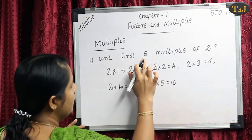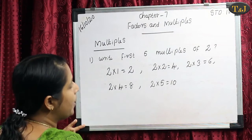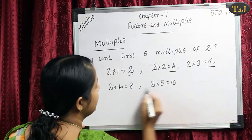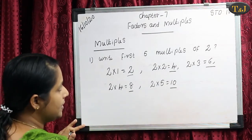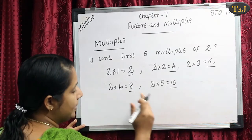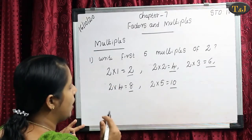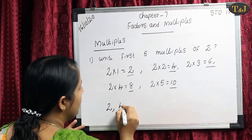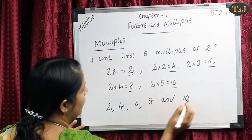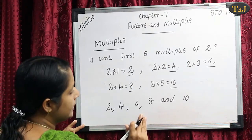Here we want only the 5 multiples of the number 2. The multiples means that when we multiply a number by 1, 2, 3, 4, 5, etc., its result is known as its multiples. So the first 5 multiples of 2 are 2, 4, 6, 8, and 10.